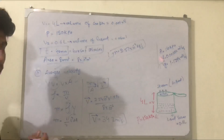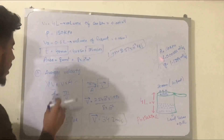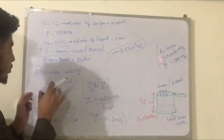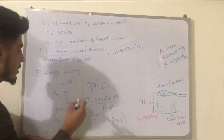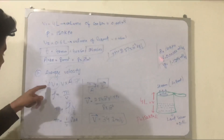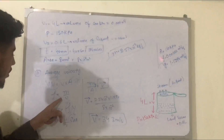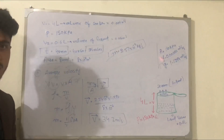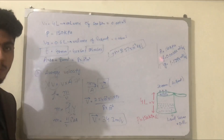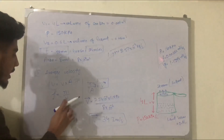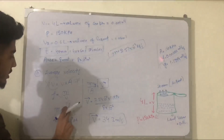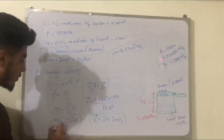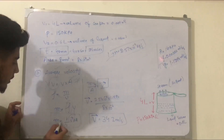Velocity equals volume flow rate divided by area. The volume flow rate is not directly known, so we use the relation: mass equals density times volume. Since the form of the liquid is unknown, we use specific volume instead of density, and write velocity times area instead of volume. This gives us the velocity equation.